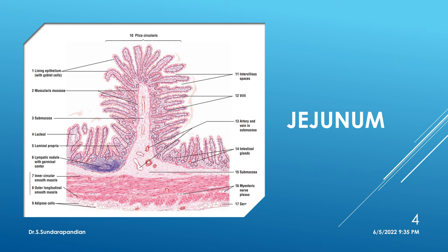So the feature of mucosa in jejunum: you will have villi with simple columnar epithelium — same as duodenum — but with more numbers of goblet cells among the columnar epithelial cells. In the lamina propria you can make out crypts of Lieberkühn. For identification of jejunum, first see all four layers: mucosa, submucosa, muscularis externa, and serosa.